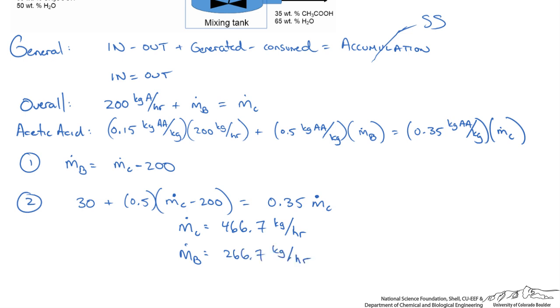Does this make sense? Well we should have a larger flow rate out. The outlet concentration is closer to solution B, so more of solution B than solution A is likely. It does pass a common sense check.